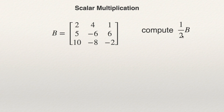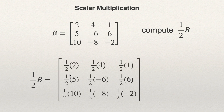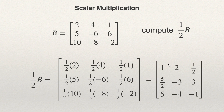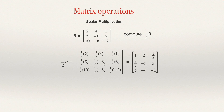I will be multiplying this one half by each of the elements of B. So the answer will be one half of 2, one half of 4, one half of 1, and so on — multiplying each number by one half, or by 1 over 2. One half times 2 is 1. One half times 4 is 2. One half times 1 is one half. One half times 5 is 5 over 2. One half times negative 6 is negative 3, and so on. We obtain a matrix that is the same size as the initial matrix. So this is scalar multiplication — we multiply each of the entries of the matrix by the scalar.